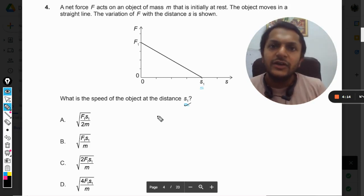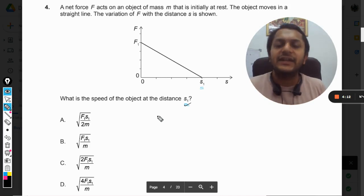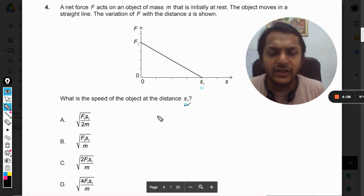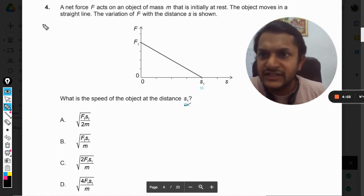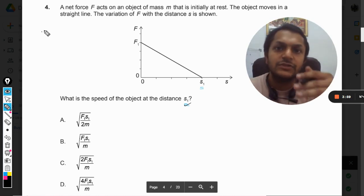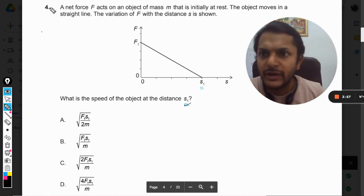That work done would be equal to the change in the kinetic energy of the body. We know that if there is no friction, if there are no dissipative forces, if it is a conservative field, there is this principle - the work-energy theorem.